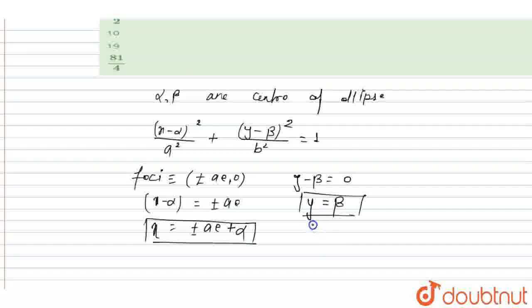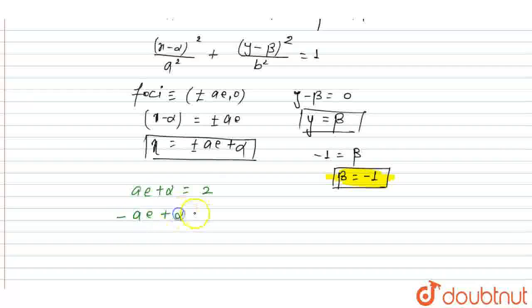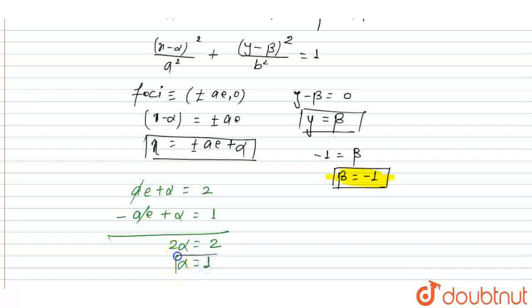In this question, the y-coordinate of the foci is given as −1. So we can say β = −1. Taking the positive value: ae + α = 2, and taking the negative value: −ae + α = 1. When we add these two equations, ae cancels out, giving 2α = 3, so α = 3/2.